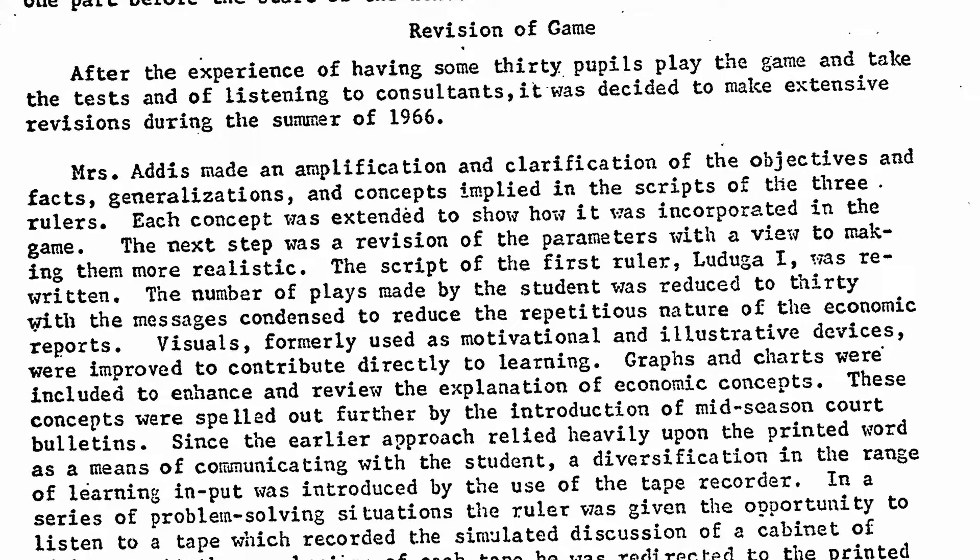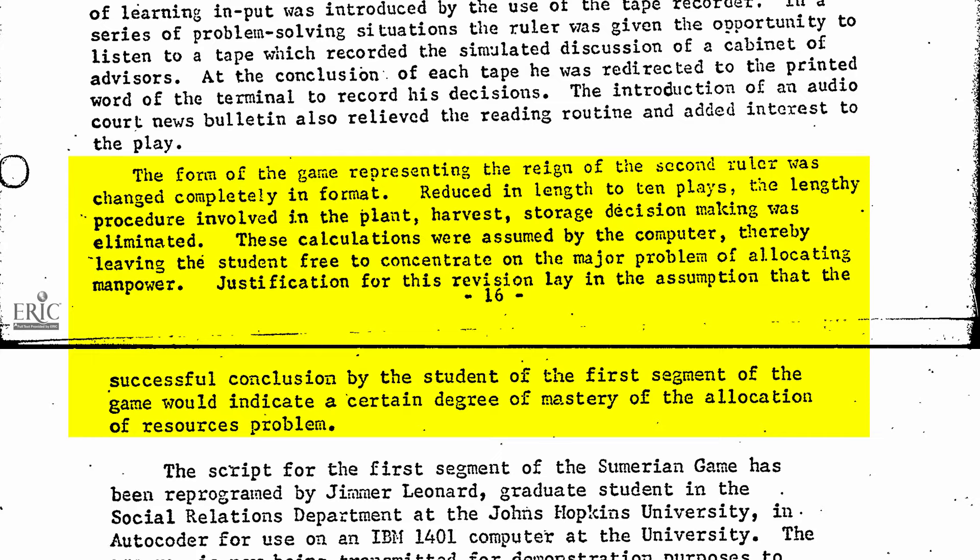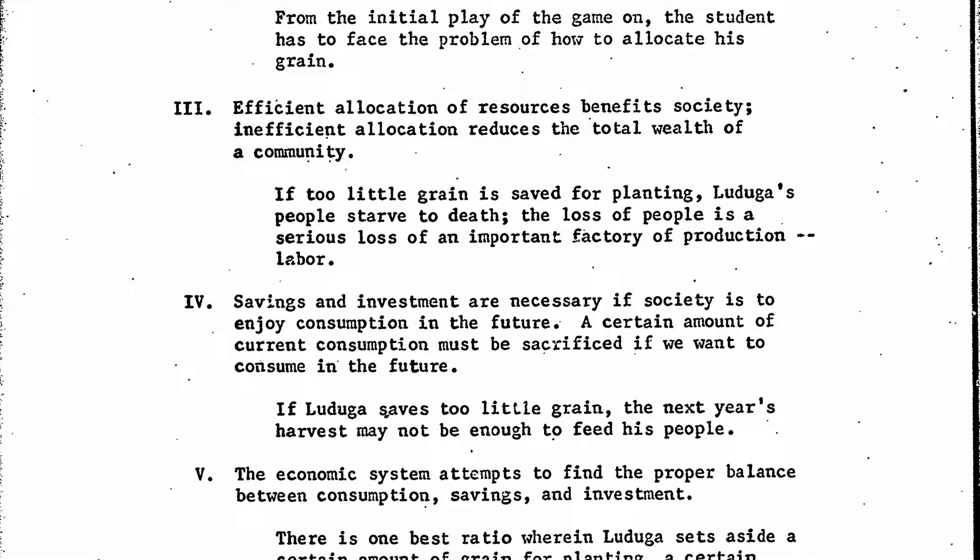This is like the first content patch for a game ever. She rewrote the script for Laduga I to clarify objects and remove generalizations. The game was reduced to 30 turns. Prompts were rewritten and condensed to reduce repetitiveness. More use was made out of the AV component with the introduction of mid-season court bulletins and tape-recorded cabinet discussions for the students to react to. This took the onus off the printed word and made the visuals much more important. She removed the agricultural component from the second phase because she believed that once the player showed mastery of it in the first phase, they should be allowed to focus on phase 2 elements of gameplay. One of the game's primary goals was to teach students basic economic principles — for example, disasters require redistribution of resources, and specialization tends to increase efficiency.